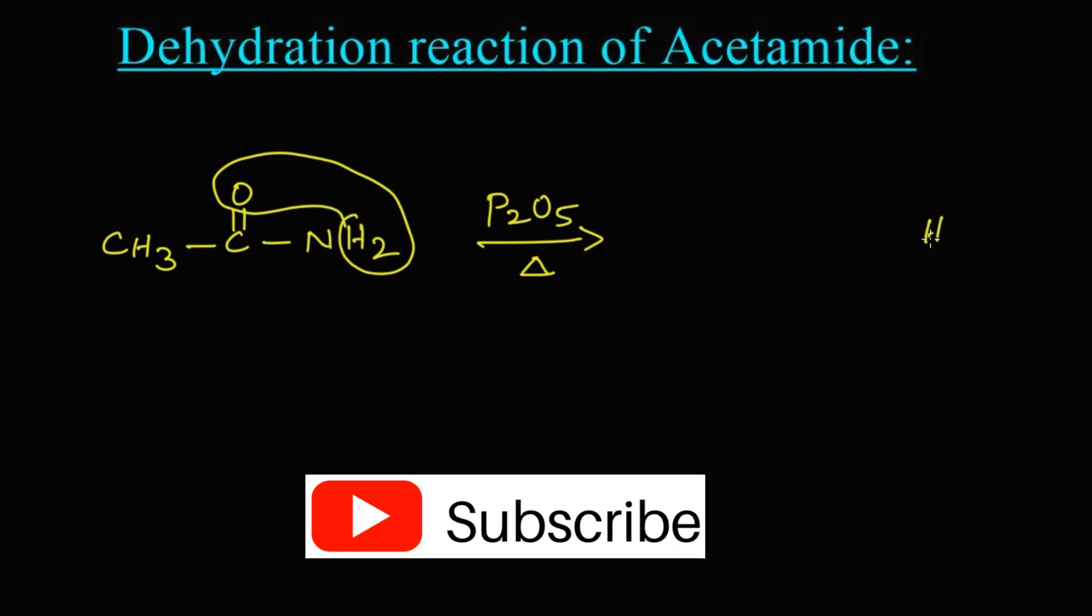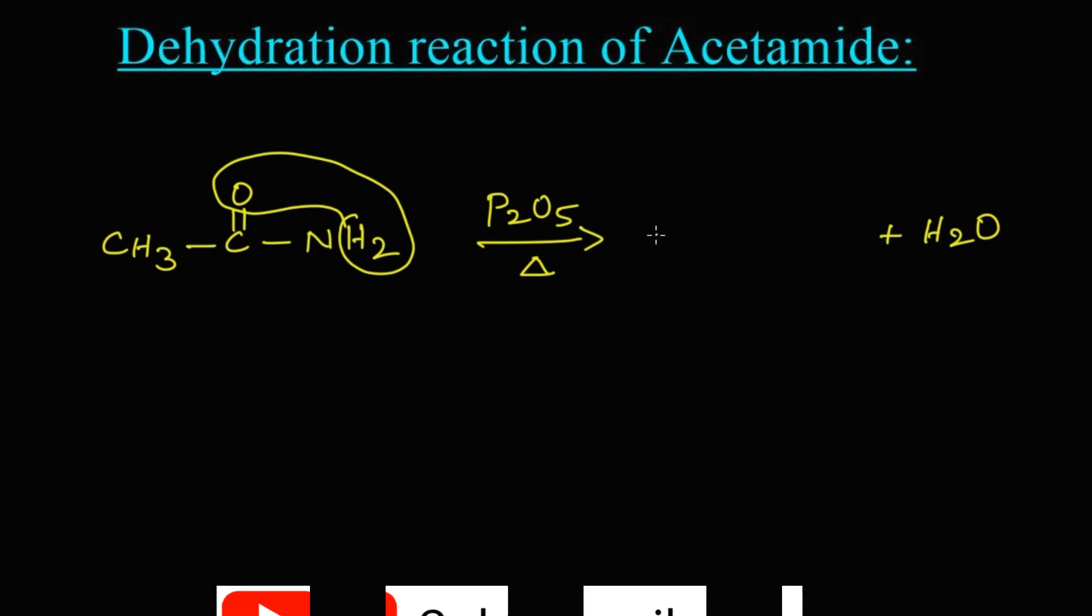H2O is left, that is dehydration takes place, and CH3-C, here only nitrogen is there, so triple bond N. What is this? This is methyl cyanide. Come on, let's write the name for these structures.